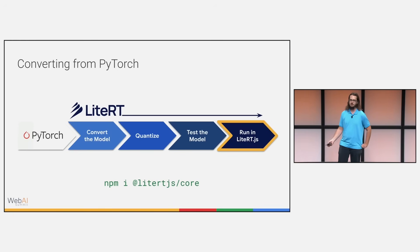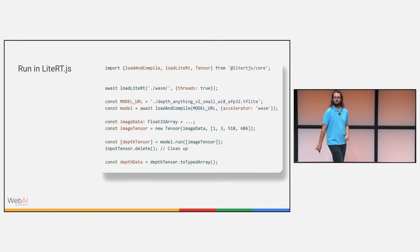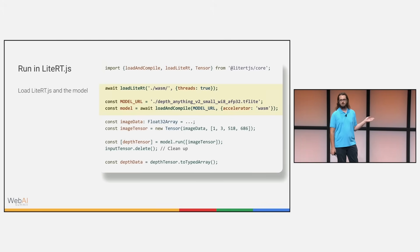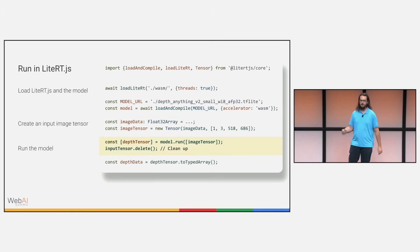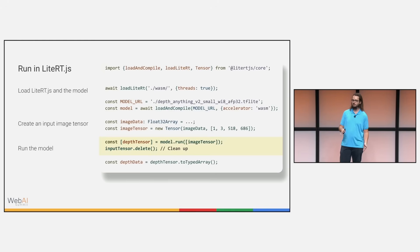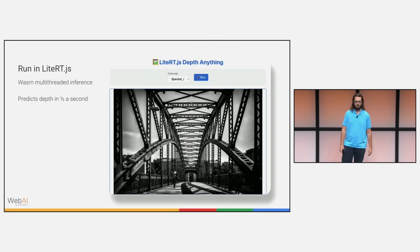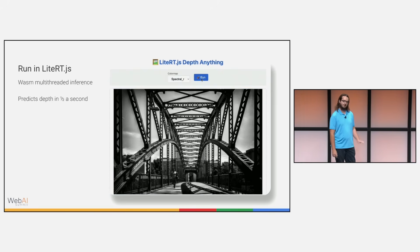Once we've verified that the model works, we can take the final step of running it with LightRT.js on the web. The LightRT.js core package is the main entry point for running models. We grab the previously converted and quantized model, load it with LightRT.js, specify WASM as the accelerator since WebGPU failed, and create an input tensor — which you'd scrape from a webcam input or similar source — and then run the model. We get our depth tensor output, and in this demo, if we upload an image and click Run, we get a pretty good depth estimation from this local model, predicting in about half a second.